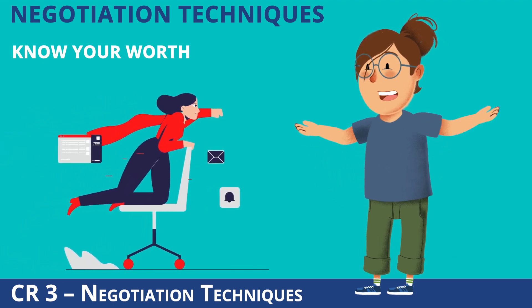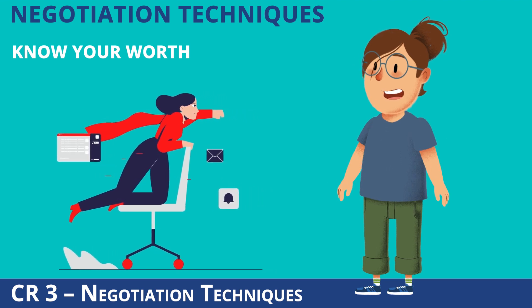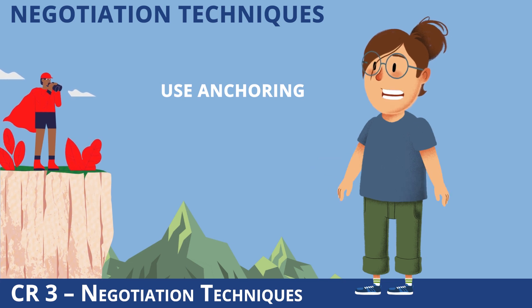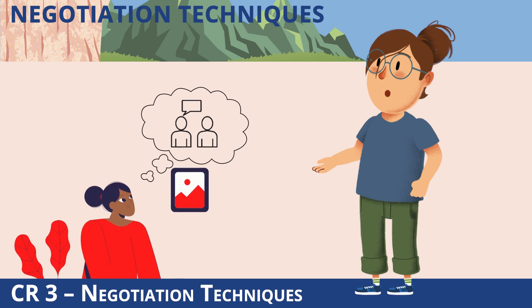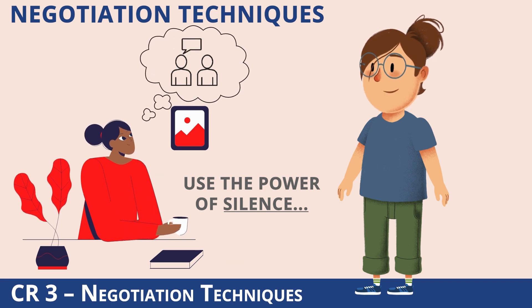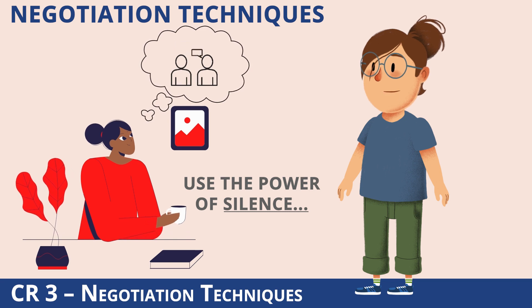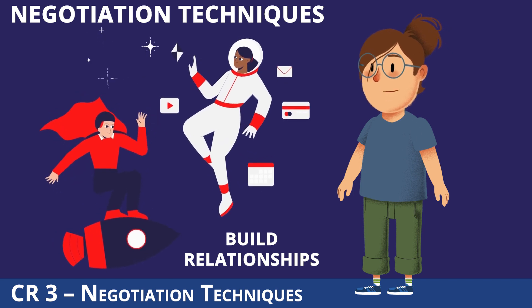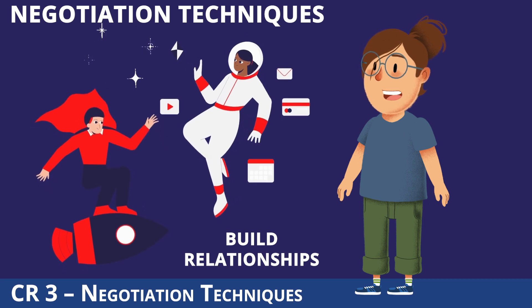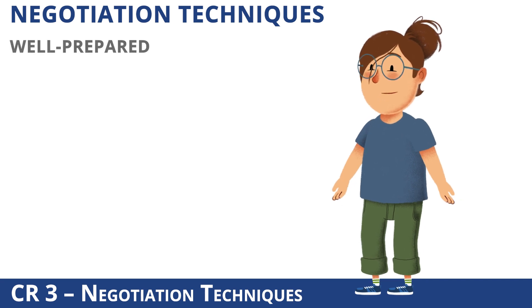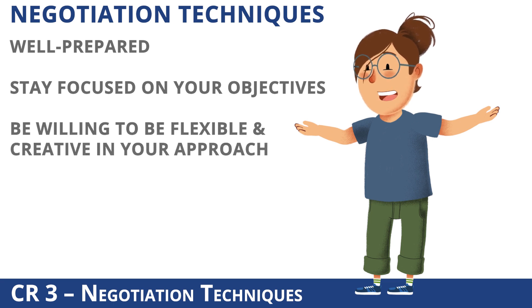Know your worth — understand the value you bring to the table and the importance of the deal to the other party, which will help you negotiate from a position of strength. Use anchoring — use a high starting point in your negotiation to anchor the other party's expectations and create a reference point from which to negotiate. Use the power of silence — use silence to your advantage during negotiations, as sometimes the other party may feel compelled to fill the silence by making concessions. Build relationships — focus on building a relationship with the other party during negotiations to create trust and goodwill, which can lead to a more successful outcome. Overall, the key to strong contract negotiation techniques is to be well prepared, stay focused on your objectives, and be willing to be flexible and creative in your approach.